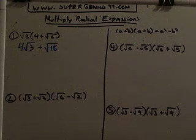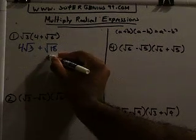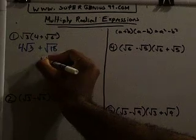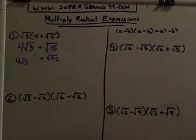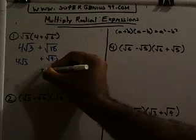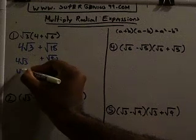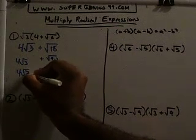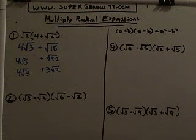We can simplify more because in 18 we have a perfect square, which is nine times two, because nine times two is 18. The square root of nine is three. So our final answer is four square root of three plus three square root of two.